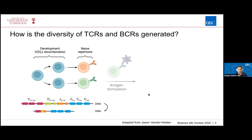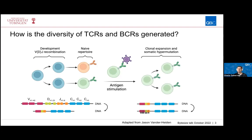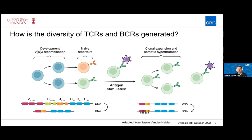In the case of B cell receptors, there's another process that generates more diversity upon antigen stimulation. For example, when we were first in contact with the coronavirus or the coronavirus vaccine, some B cells were able to recognize the antigens, were stimulated, and underwent clonal expansion, generating many children cells belonging to the same B cell clone. Through somatic hypermutation, mutations are introduced in the VDJ segments so that each child cell has a slightly different receptor sequence, allowing generation of BCRs and antibodies with even higher affinity to the original antigen.